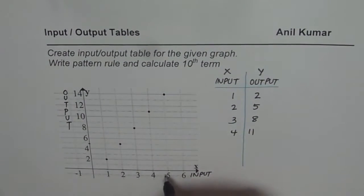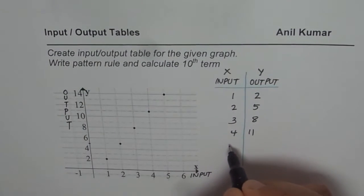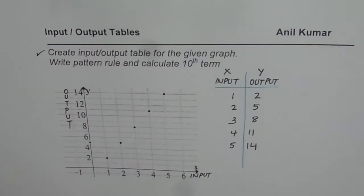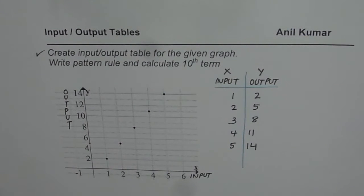So 4 and 11. And at 5, the value is 14. So 5, 14. So we have done the first part and that is create input-output table for the given graph. So that is done for us.